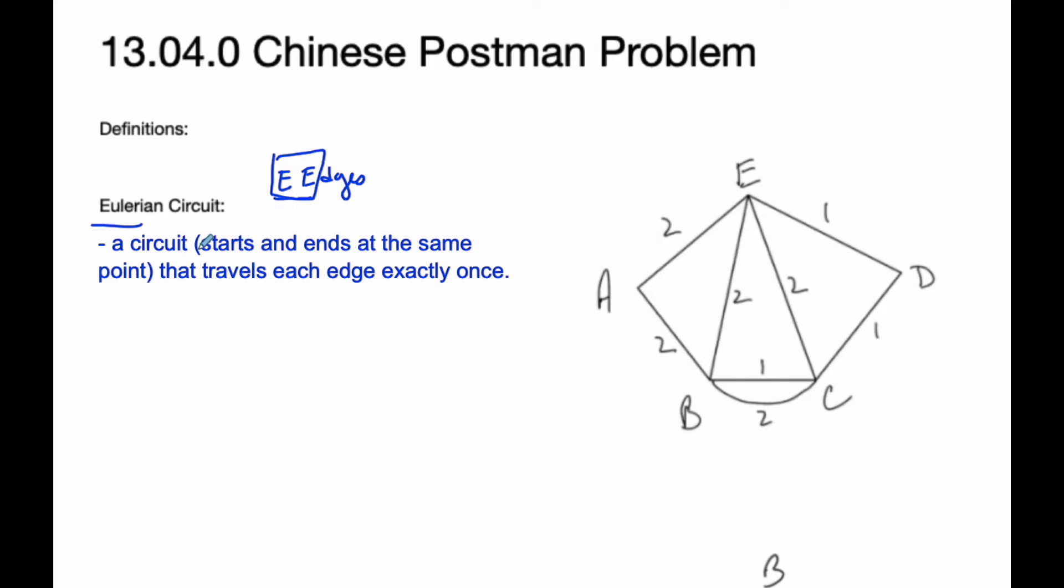And so it starts and ends at the same point. So for example, I could start here at A, and then go to B, and then go to C, and then back to B, and then to E, and then to C, and then to D, to E.